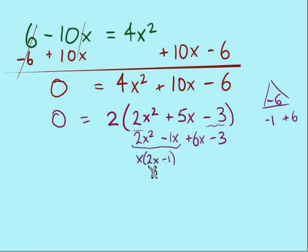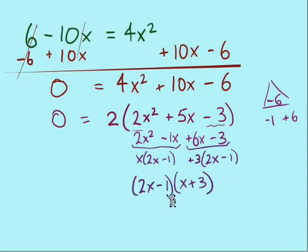From the first pair, an x we could divide out to leave us with 2x minus 1. From the second pair, there is a 3 we could divide out, a positive 3, leaving us with 2x minus 1 in parentheses. And, it's a good thing we see our binomial factor on both sides, 2x minus 1 is one factor. The other is x plus 3.